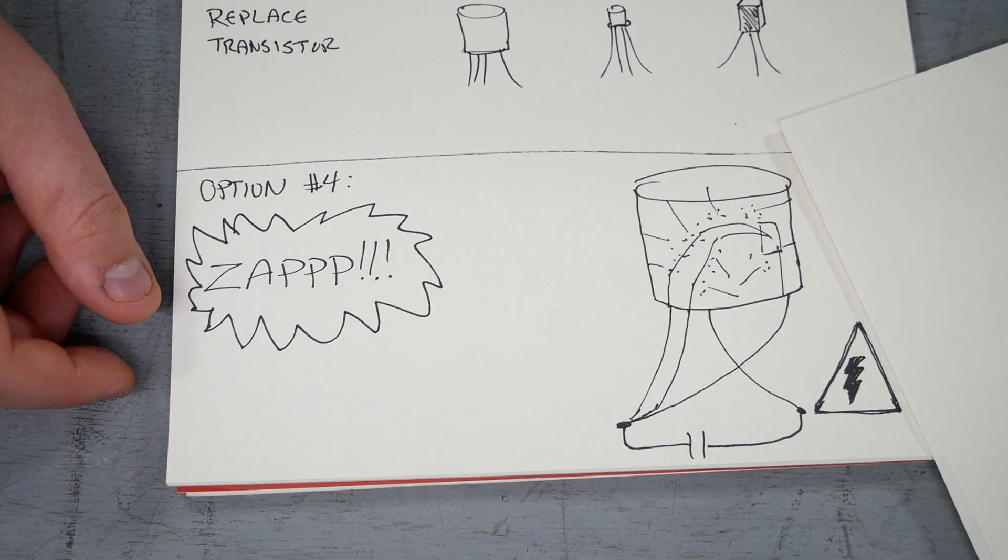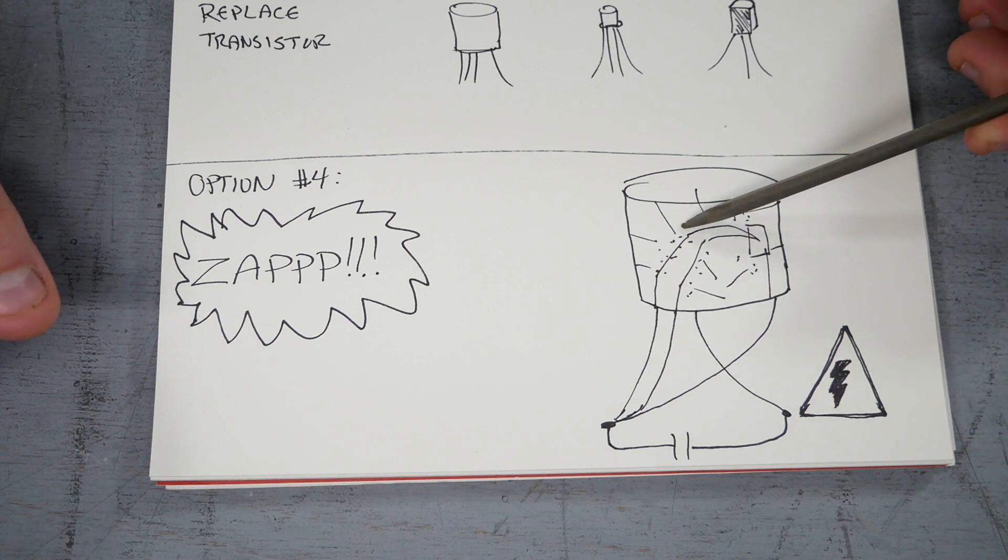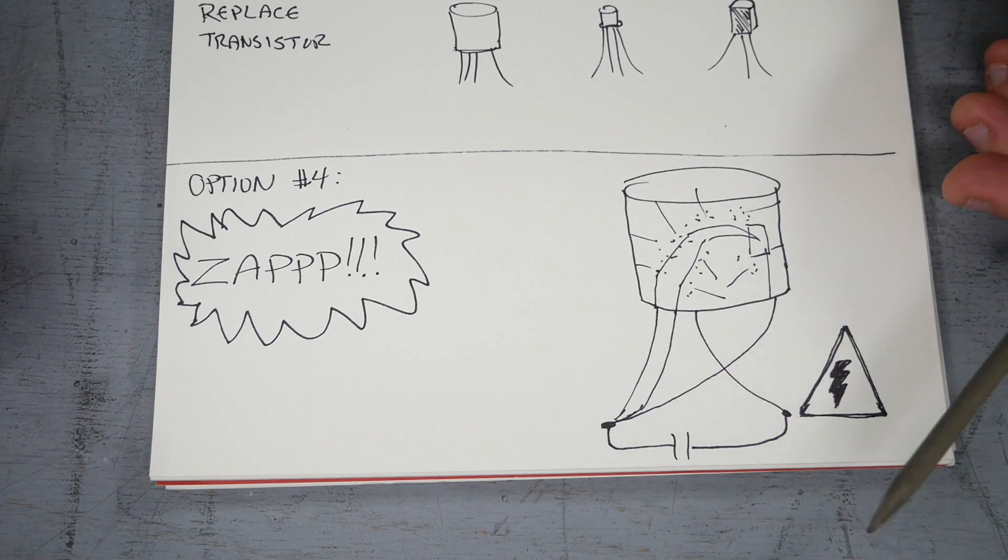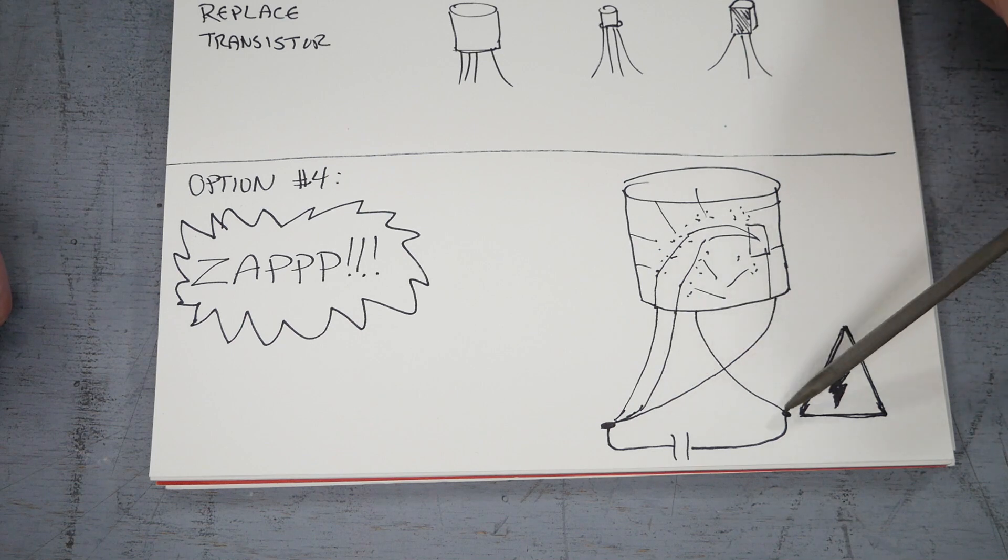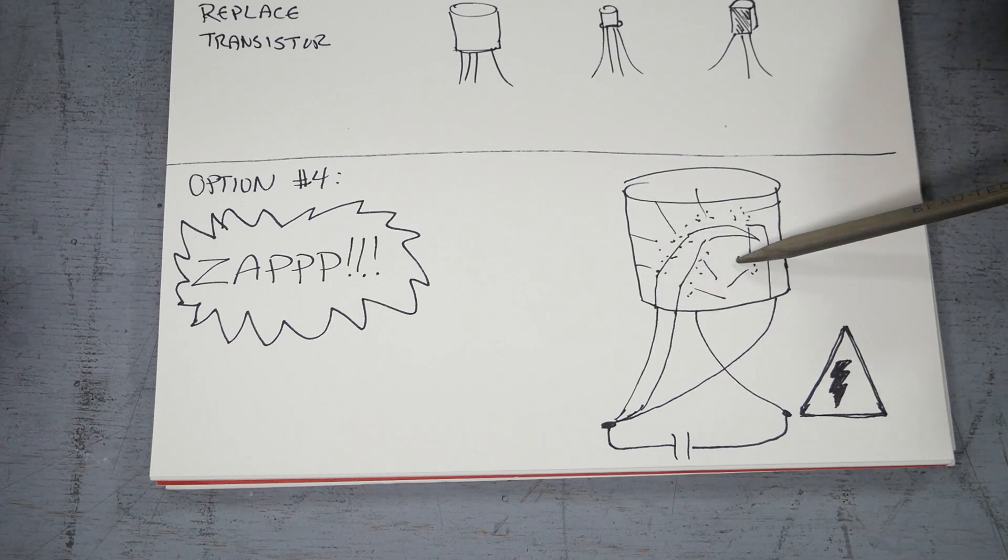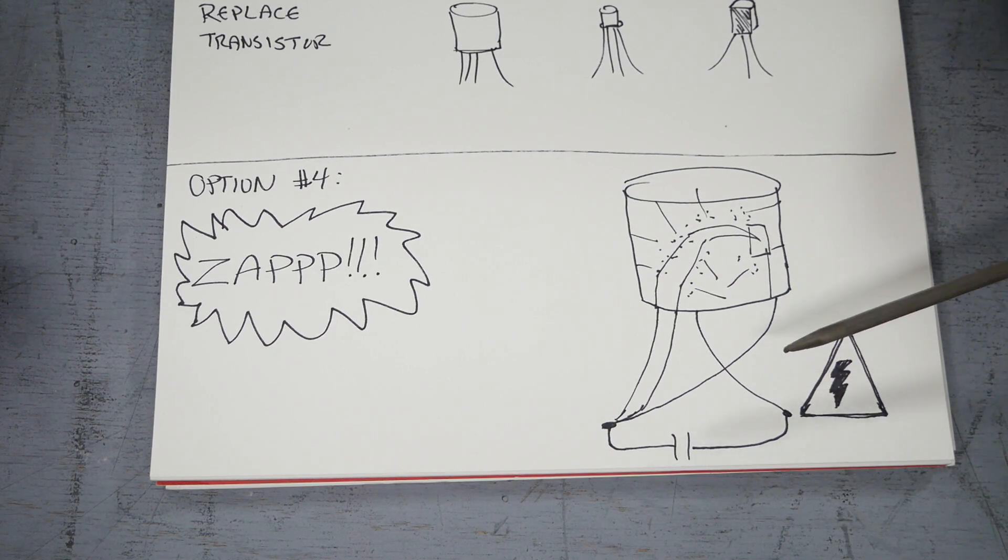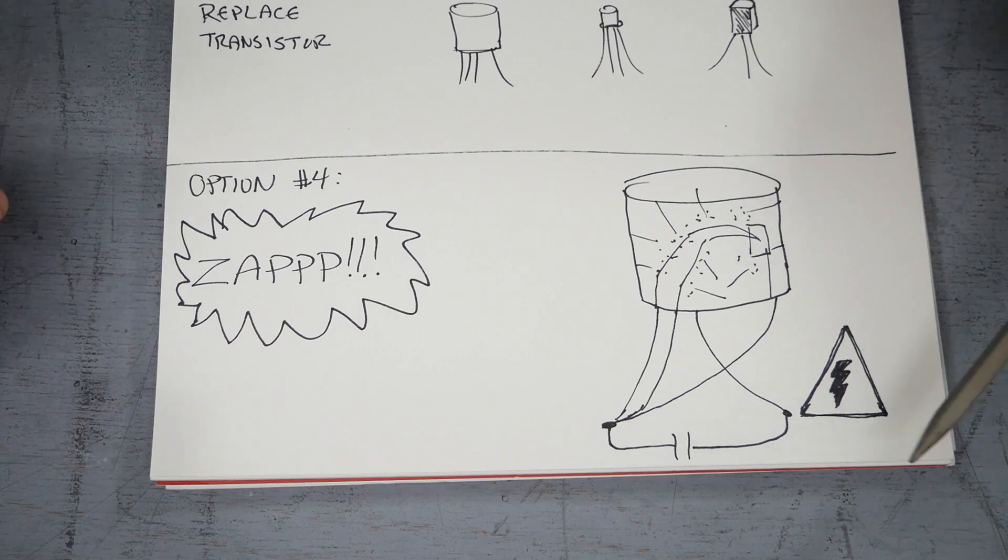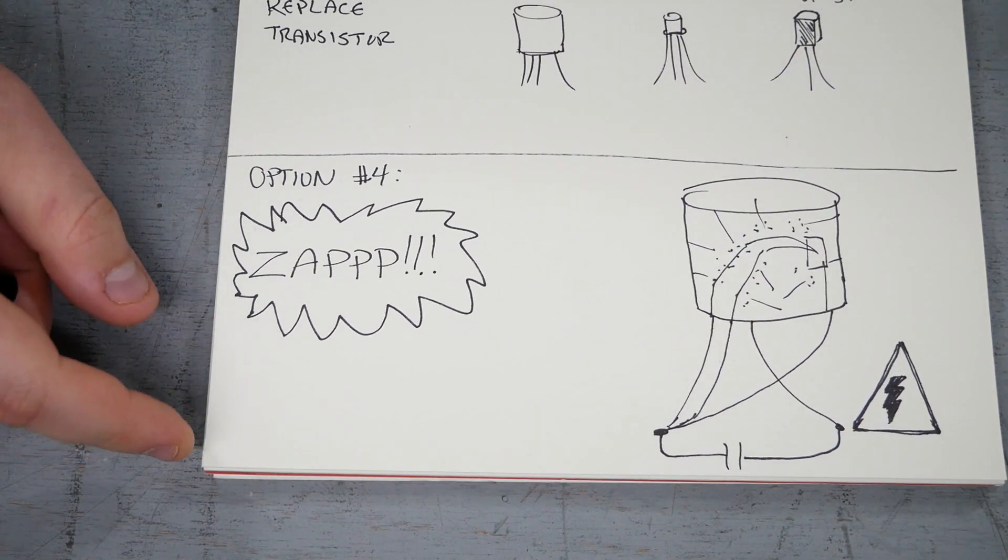However, there is a fourth option and that fourth option is to zap the shit out of them, which we are going to try today. So the idea is that the whiskers are very small in diameter. Their current carrying capability is quite limited. And so therefore, if we were to pass a quick jolt of high voltage electricity between the three electrodes of the transistor and the shield itself, we could hopefully vaporize the whiskers that are making shorts to the transistor without damaging the transistor itself.